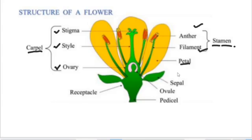We also have a part called the receptacle. This part supports the floral parts. You can see this is where we have the receptacle. Then we also have the pedicel. These are the parts of the flower, so you have to make sure you know them — very important.